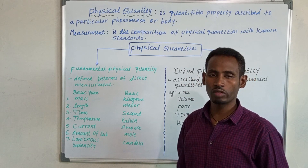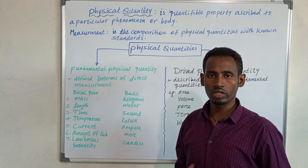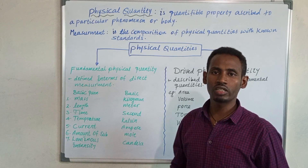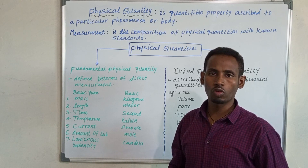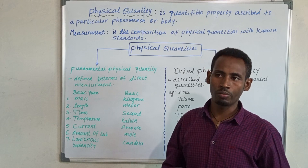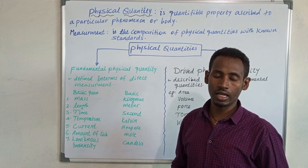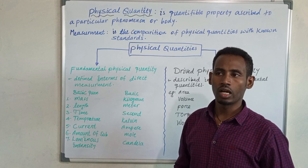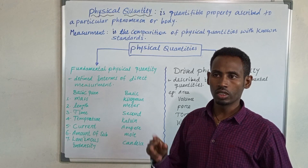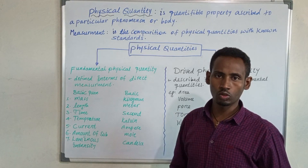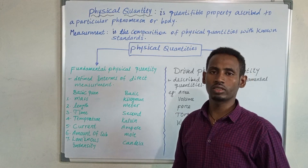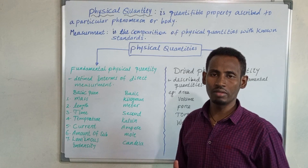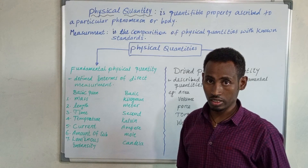Modern measurements are measurements which are reliable and standard, which can give us constant or uniform information about physical quantities throughout the universe — it is the same everywhere. For example, two people asked to measure one meter of stick can bring us the same size of stick.